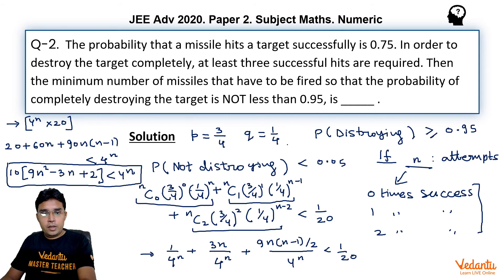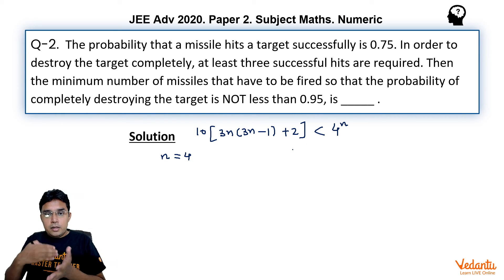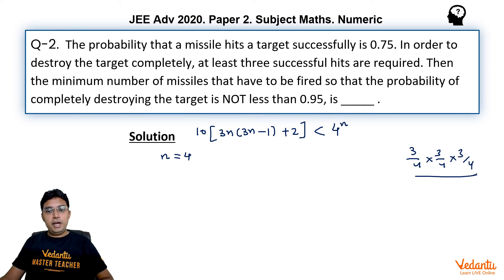This result is 10 into 3n into 3n minus 1 plus 2 and that should be less than 4 raised to the power n. Now we will be putting the values of n one by one but our first guess should be n is equal to 4 because if we put n is equal to 3 that means all targets should hit the target, all attempt should hit the target and for that probability will be 3 upon 4 into 3 upon 4 into 3 upon 4 and we can very easily see it is not possible to have probability greater than 0.95. So 3 is out of question.